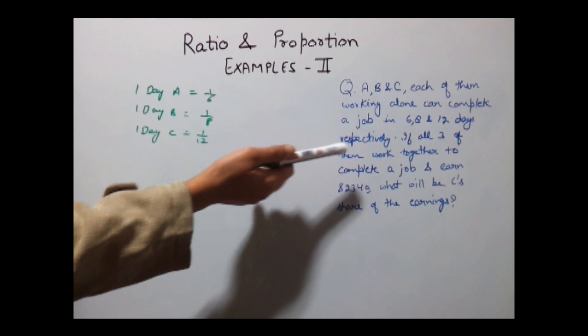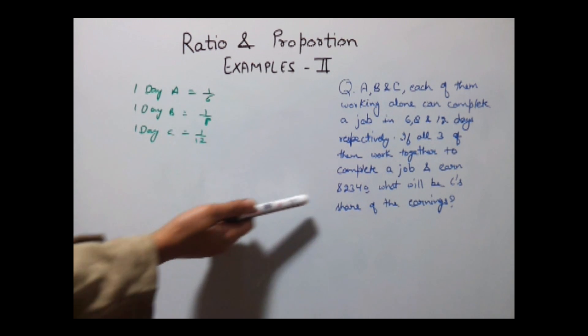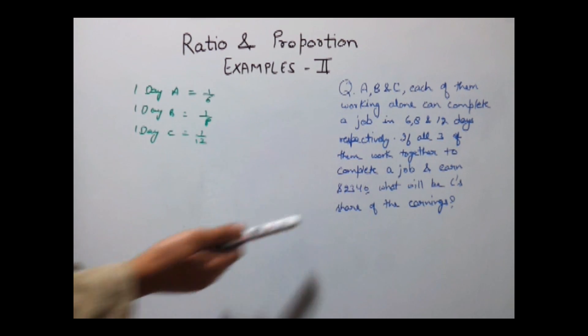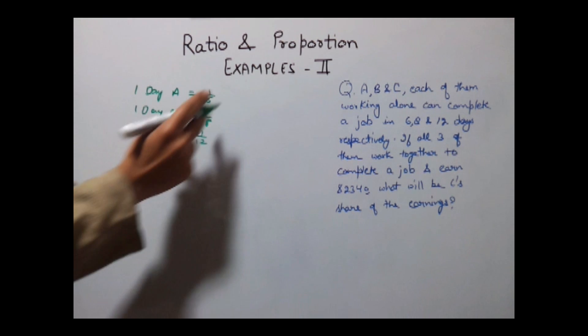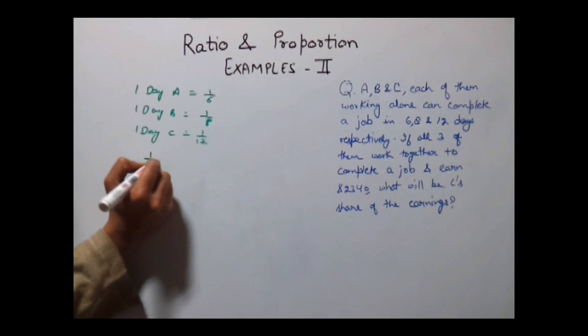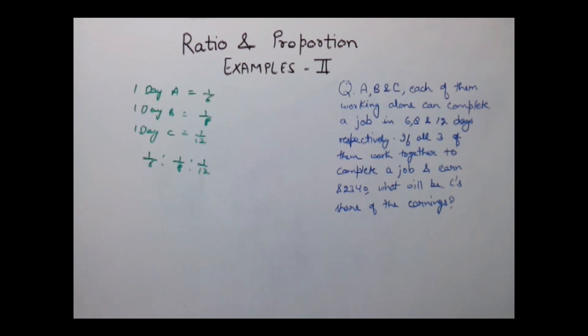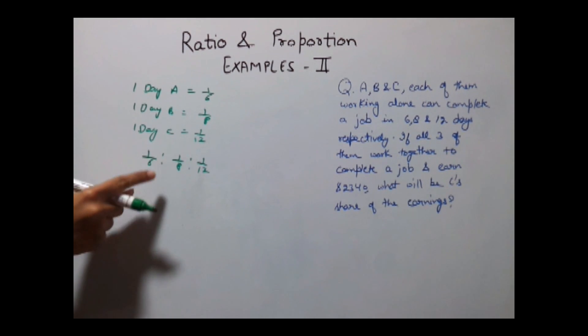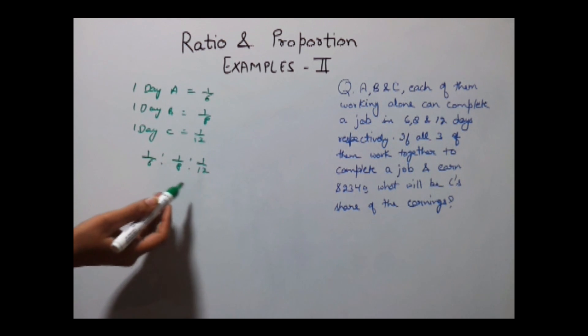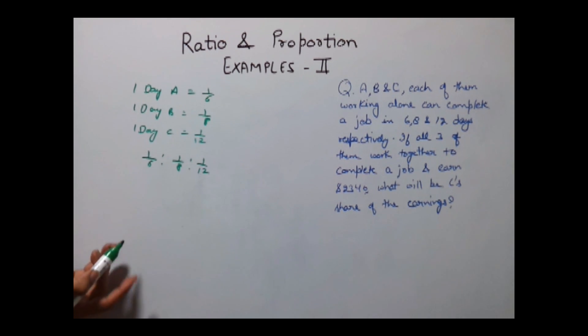If they are working together they will complete the work all together and in the same ratio they will divide it. So our ratio becomes 1/6, 1/8 and 1/12. If we multiply this ratio by their LCM then it will not affect the ratio.